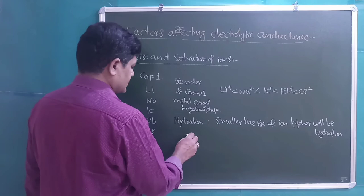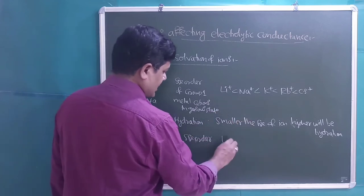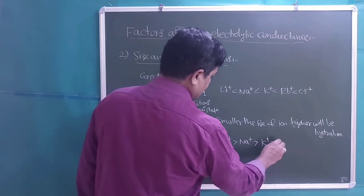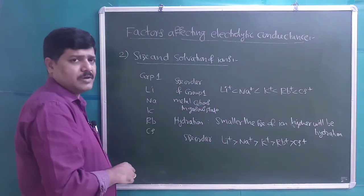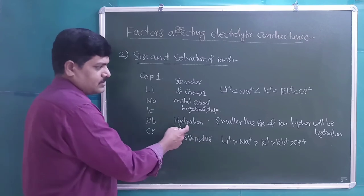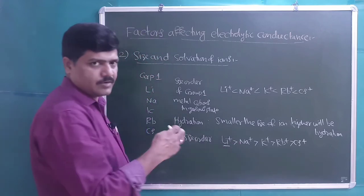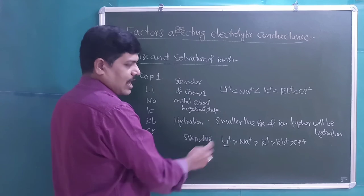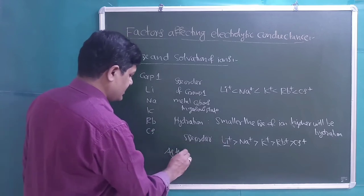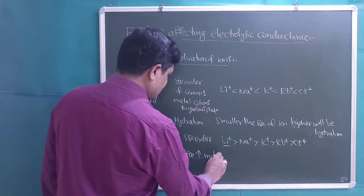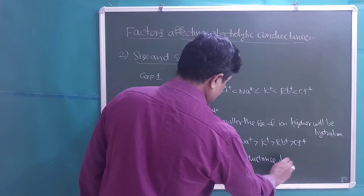Due to hydration, the size order becomes Li⁺ > Na⁺ > K⁺ > Rb⁺ > Cs⁺ in aqueous medium. Cs⁺ has smaller hydrated size because of its larger ionic size — hydration is less. Li⁺ has more hydration due to its smaller size, so it is associated with more water molecules, making its effective size larger. As the size of the ion increases, mobility decreases, and hence conductance decreases.